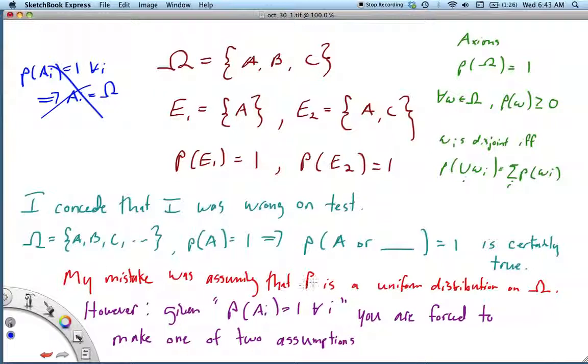My mistake was assuming that P is a uniform distribution where you're looking at the cardinality of the set corresponding to your event divided by the cardinality of Ω. That was a mistake.